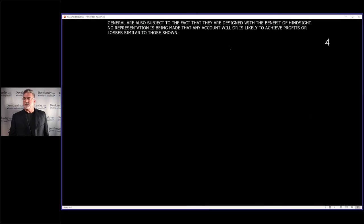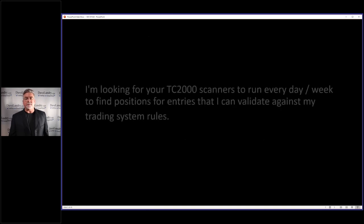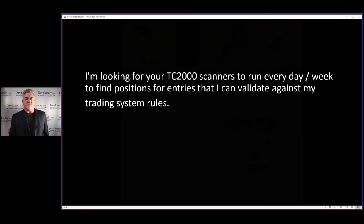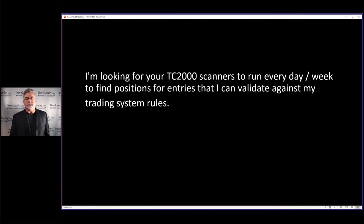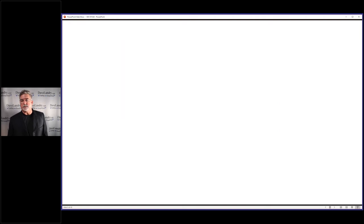There's a disclaimer screen — you can lose money trading. To sum it up, borrowing a line from my buddy Greg Morse: all predictions are about the future and a lot of stuff can happen between them. A quick question: 'I'm looking for your GC2000 scanners to run every day/week to find positions for entries that I can validate against my trading system rules.' If you go to the members area and click on members resources in the dashboard, you can download my scans and also a sample spreadsheet to track your trades.